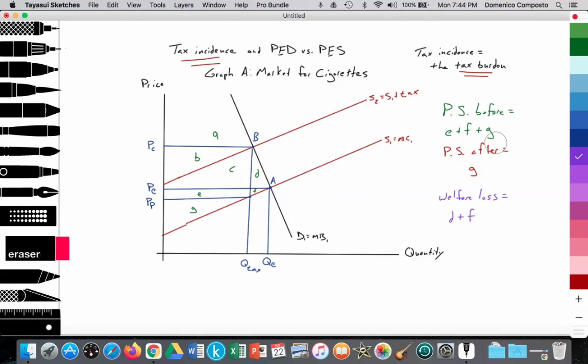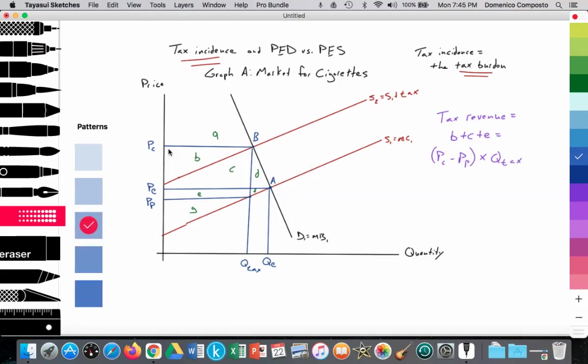Great. So what are we left with? We're left with the tax revenue. This is what we want to pay particular attention to. So the tax revenue is equal to the tax, which is PC minus PP, multiplied by the quantity of units, which is this area here, B, C, and E. Areas B plus C plus E, which is equal to PC minus PP multiplied by the number of units, which in this case is the quantity with the tax. Now, if we look at that area, we highlight that, the tax revenue, this rectangular area.